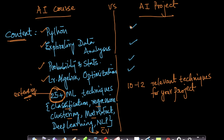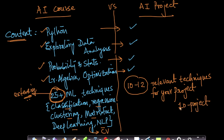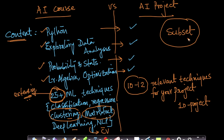In the AI project you also have Python, exploratory data analysis, probability and statistics, and linear algebra, but you learn about 10 to 12 techniques relevant to your chosen project. There are about 10 projects on our website — you pick one and learn all the techniques needed to solve it. The AI project is essentially a subset of the larger AI course, with the objective of completing your final year project using AI.